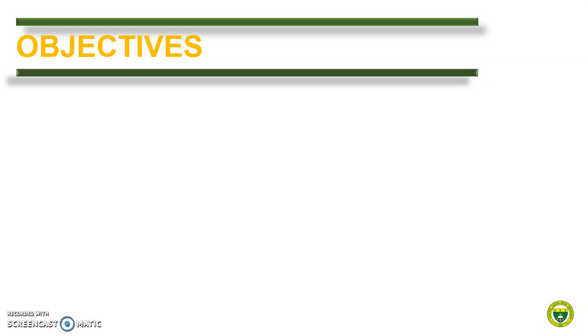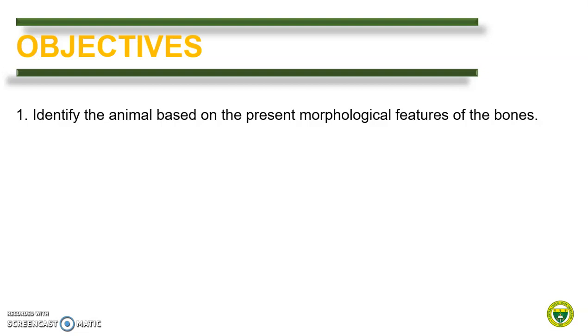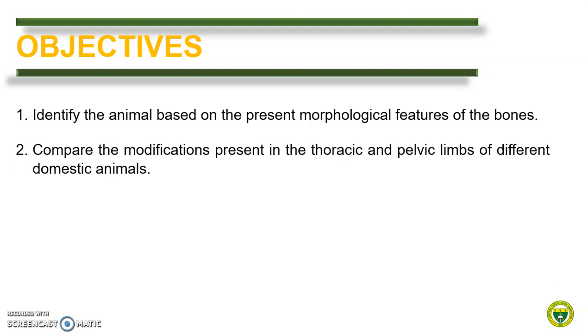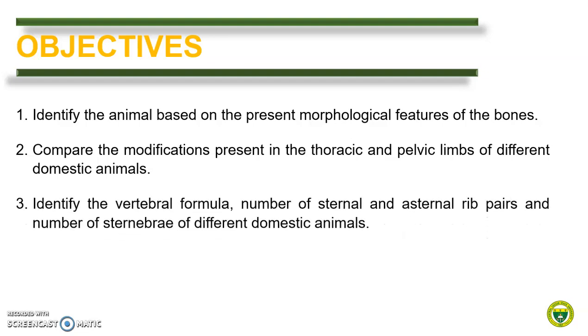At the end of this module, you are expected to be able to: 1. Identify the animal based on the present morphological features of the bones. 2. Compare the modifications present in the thoracic and pelvic limbs of different domestic animals. 3. Identify the vertebral formula, number of sternal and asternal rib pairs, and number of sternibrae of different domestic animals. 4. Identify the different splanchnic bones.